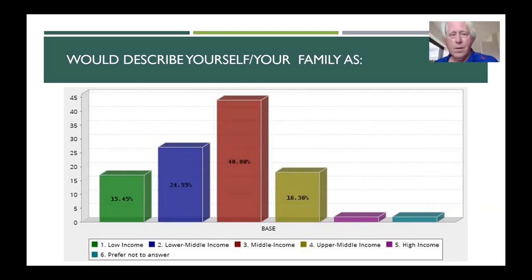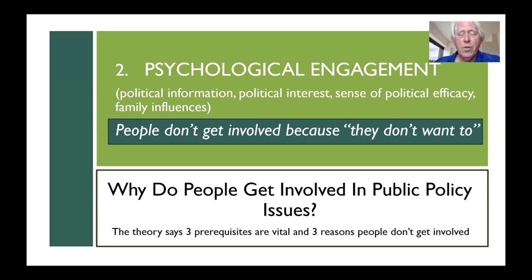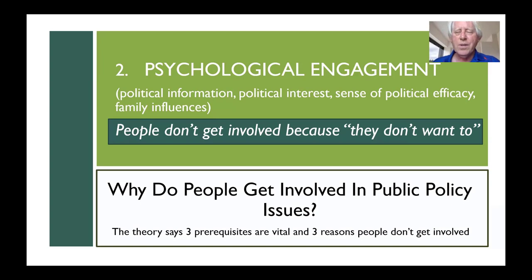That's an example of a resource — time — that is very limited. The second major variable in the civic engagement model is psychological engagement. This includes things like political information: how much do you know about the political world and system, how much interest do you have, do you feel like you can make a difference — that sense of political efficacy. There are also family influences: when you were growing up, did your family talk about political issues? If they didn't, you're simply not aware. So the statement is: people don't get involved because they don't want to.